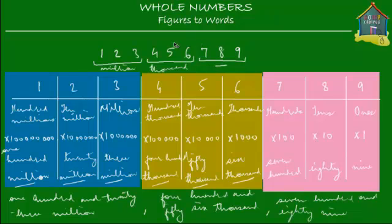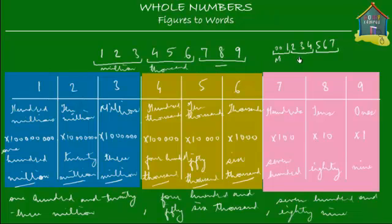Say another number — this time we've got only seven digits. All you would do is from right to left, break it up into groups of three digits. The last group on the left — the millions group — has only one digit. You can put two zeros to make it three. So this is just 1 million, this is 234,000, and this is 567.